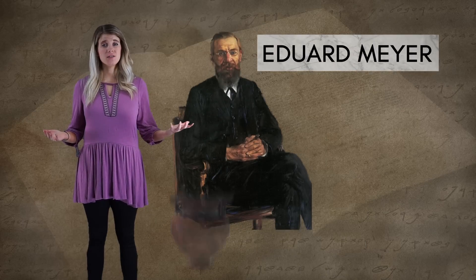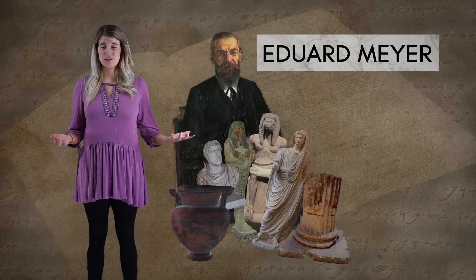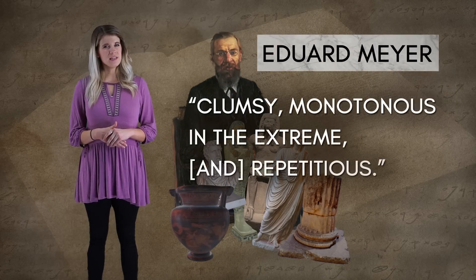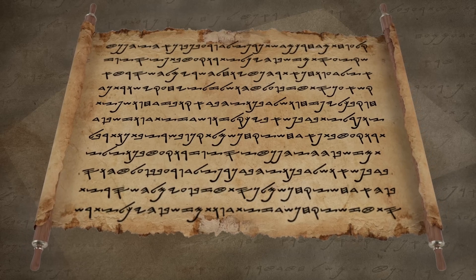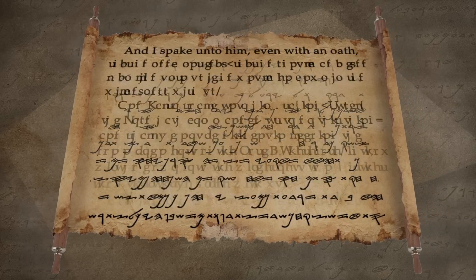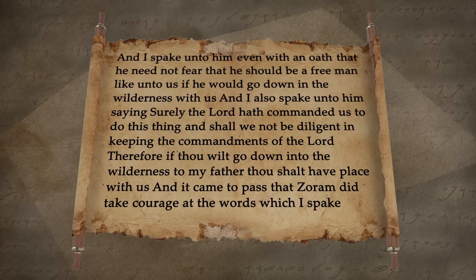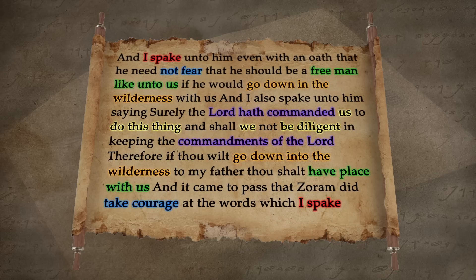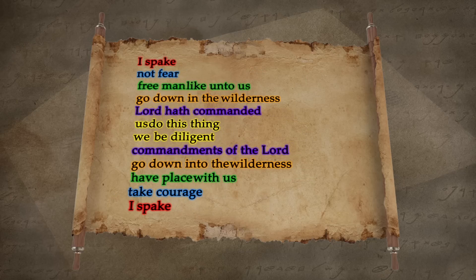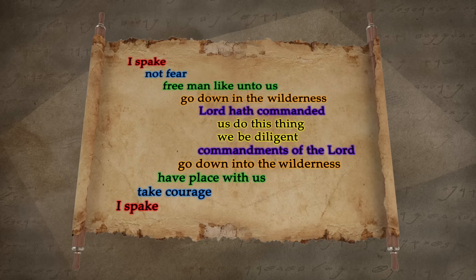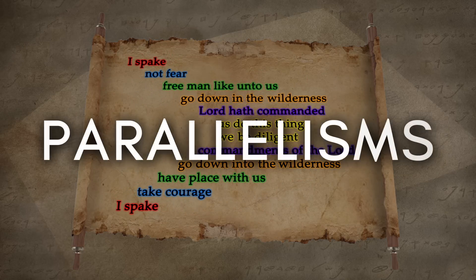Some people have disparaged the Book of Mormon for being too repetitive. For example, Edward Meyer, a prominent scholar of ancient history, found it to be clumsy, monotonous in the extreme, and repetitious. And Mark Twain once joked that if Joseph Smith had left out the phrase 'and it came to pass,' then the Book of Mormon would have only been a pamphlet. These types of criticisms may cause some to wonder: does the Book of Mormon have any literary merit?